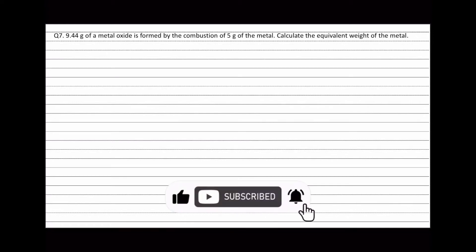Question 7: 9.44 grams of a metal oxide is formed by the combustion of 5 grams of the metal. Calculate the equivalent weight of the metal.